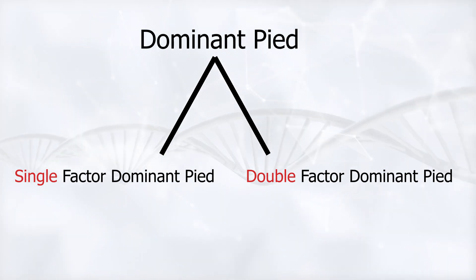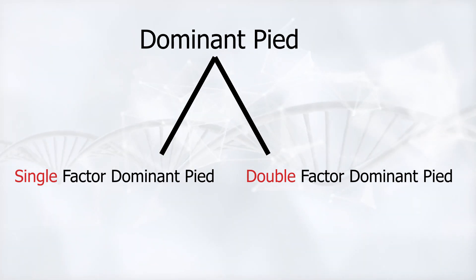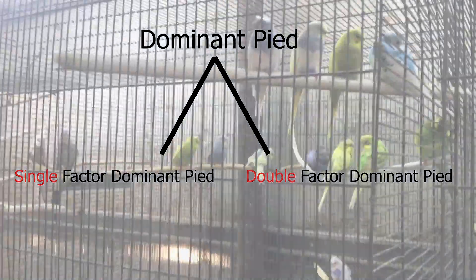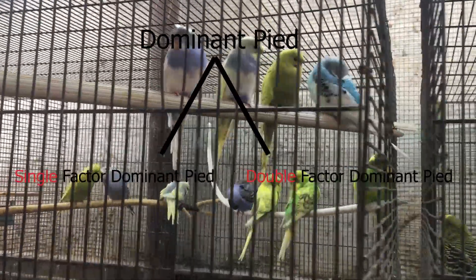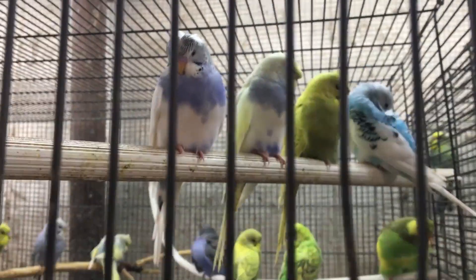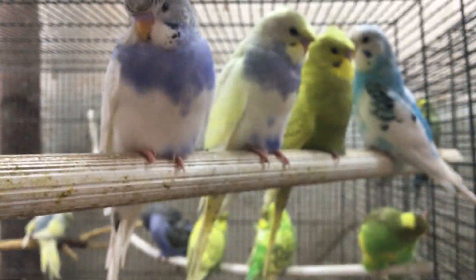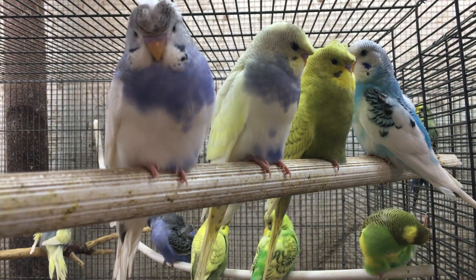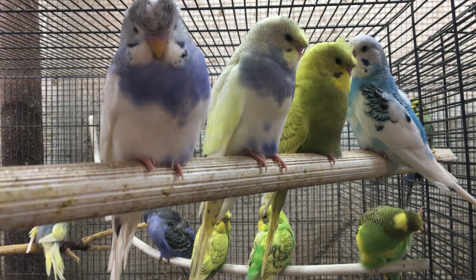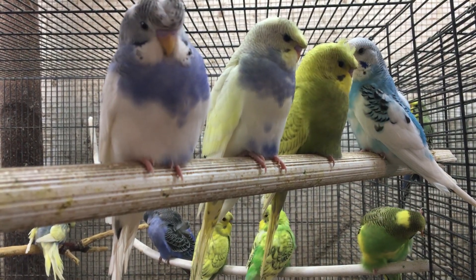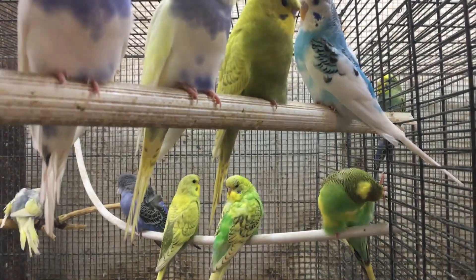Before we dig any deeper into the genes and the Punnett Square, let's see how these two forms appear on budgies. Let's start with the single factor dominant Pied. You will find that this form can appear in two different ways. One form is called the banded Pied, and it is easily recognizable, as the name suggests.